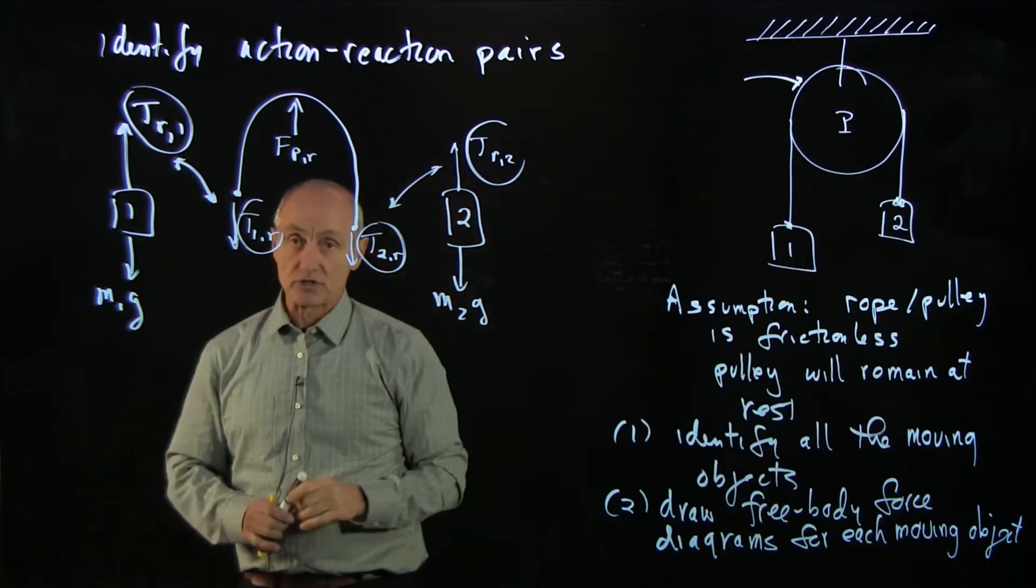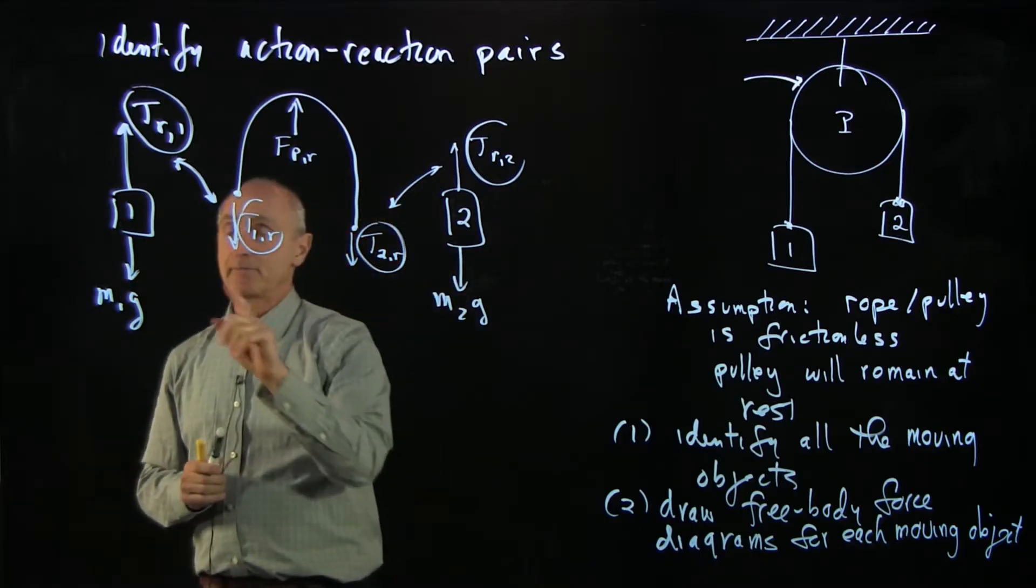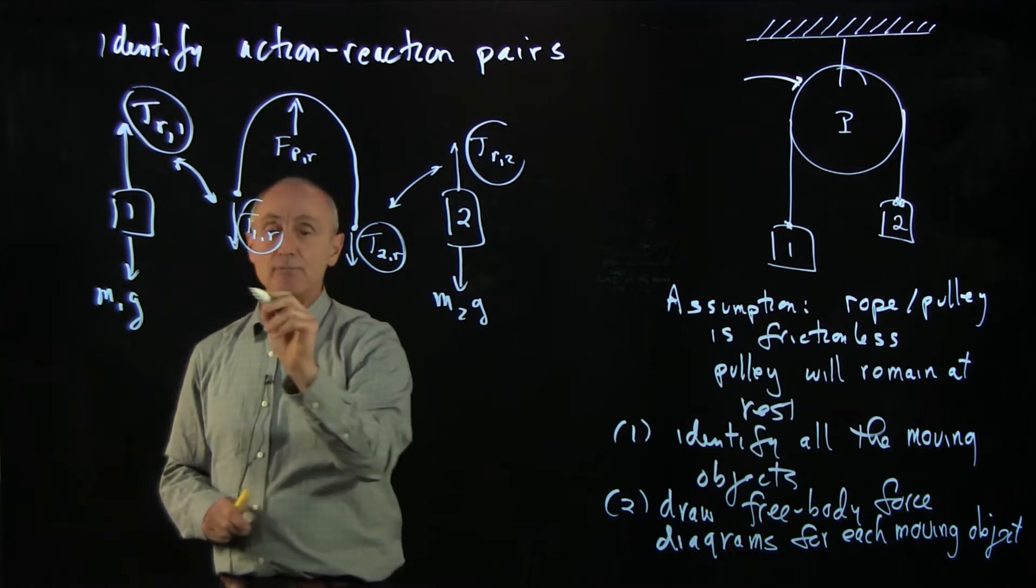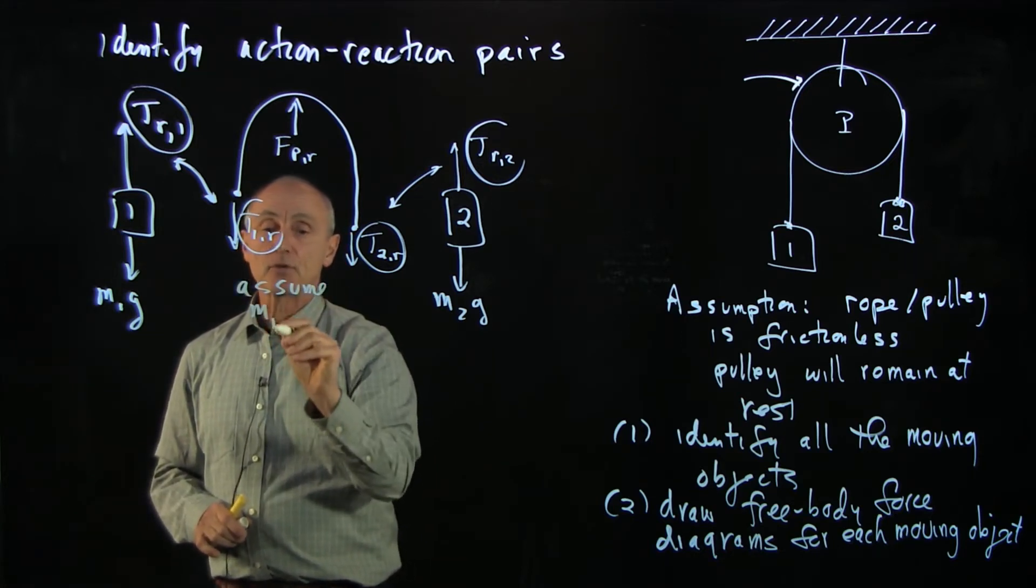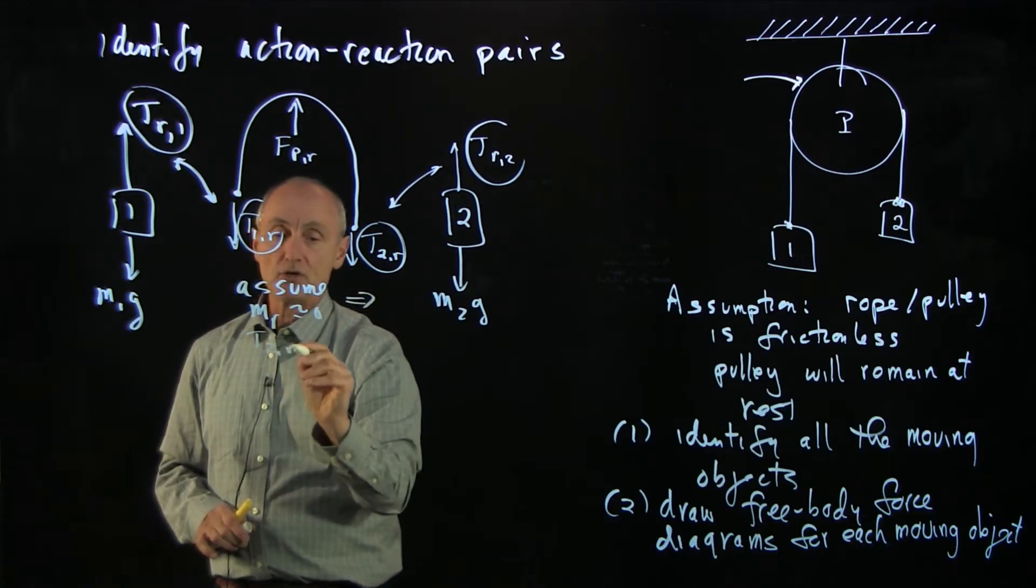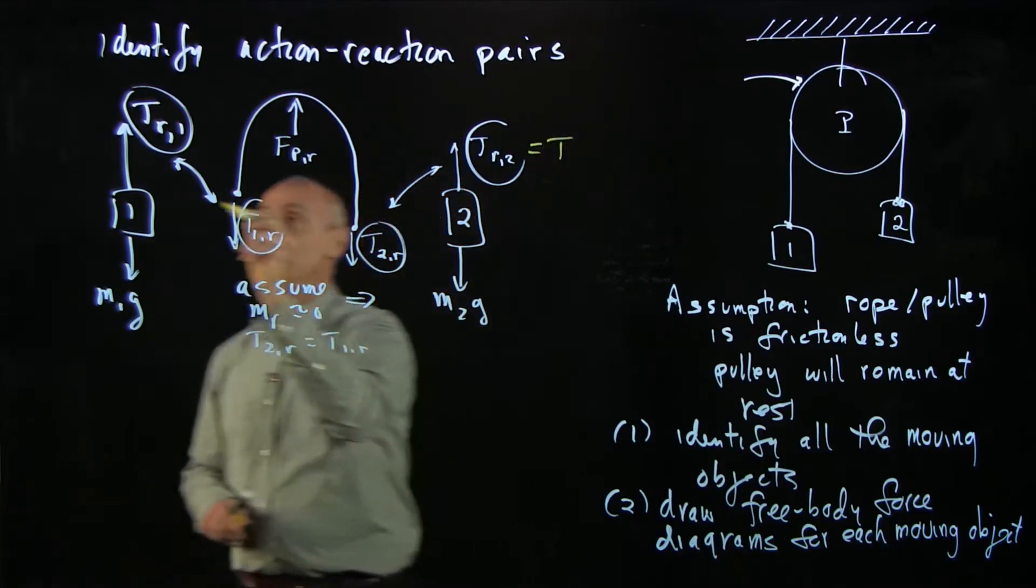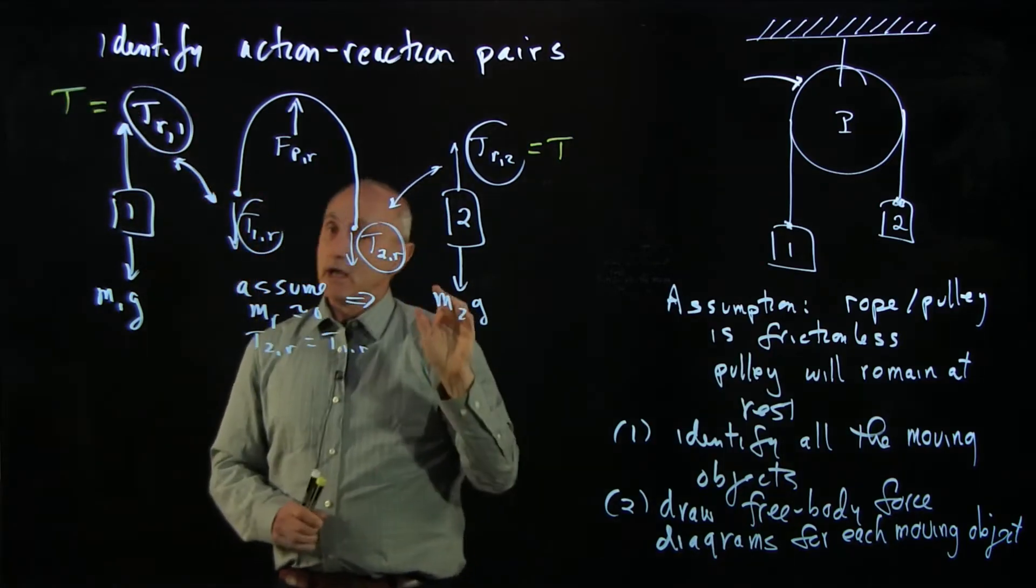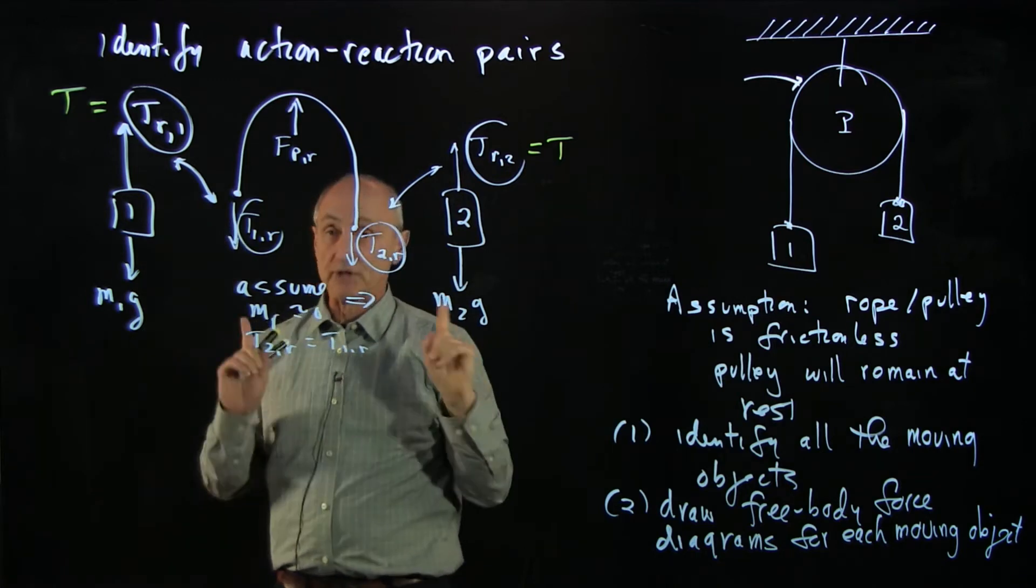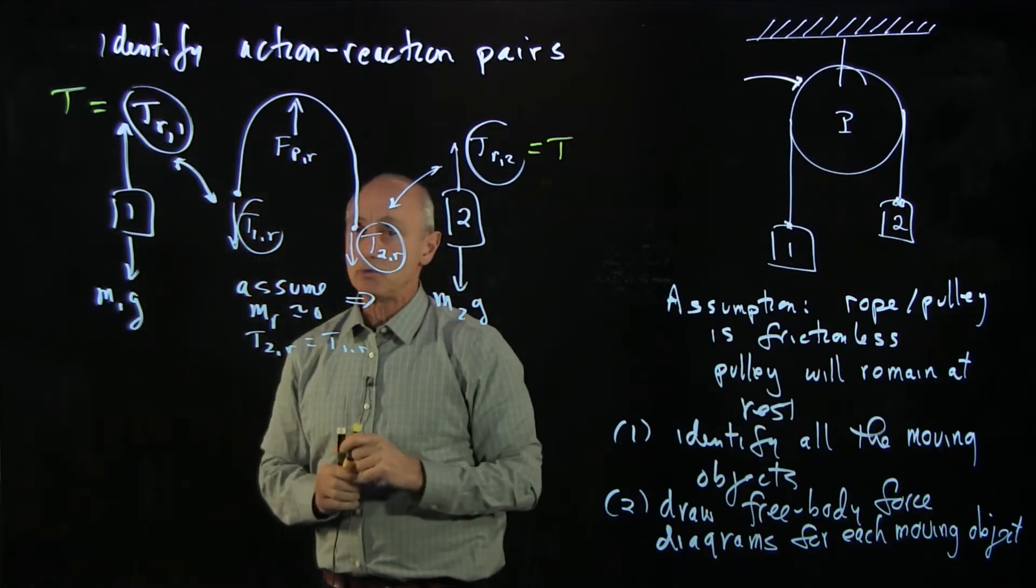Now that we've identified all the forces, we want to apply Newton's second law to each of these objects that are moving. Let's begin by remembering that if our rope, our next assumption here, assume that the mass of the rope is very light. Then the tension in the rope is constant. And the implication of that is T2r equals T1r. That's why we can now identify this as T and that as T.